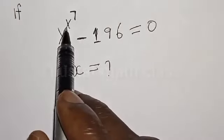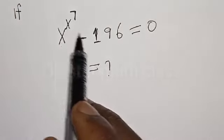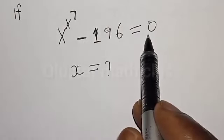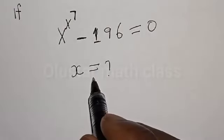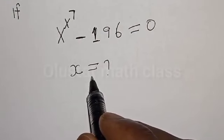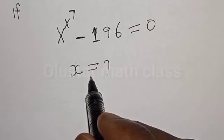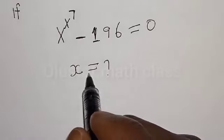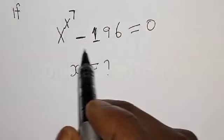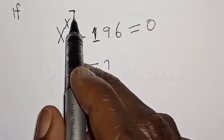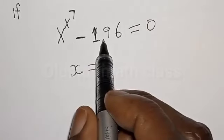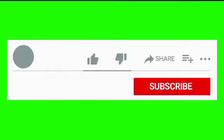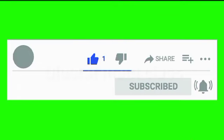If s raised to the power s raised to the power 7, minus 196, is equal to 0, what is the value of s? Hi everyone, welcome to this class — the Holista class. In today's class we want to find the value of s from this given exponential equation: s raised to power s raised to power 7, minus 196, equals 0. Please don't forget to like, share, comment, and subscribe. Solution.